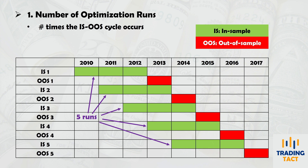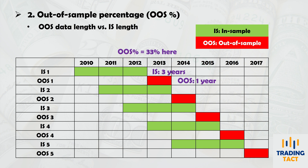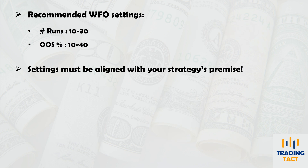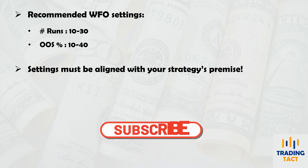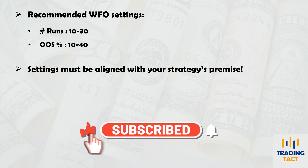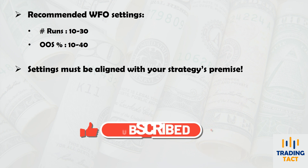Two critical parameters when setting up your optimization are the number of optimization runs and the out-of-sample percentage. For starters, I will pick the middle ground and choose 20 runs with 20% out-of-sample.